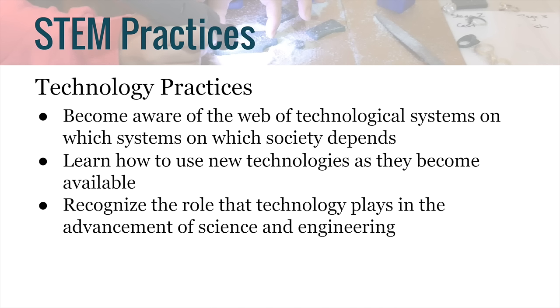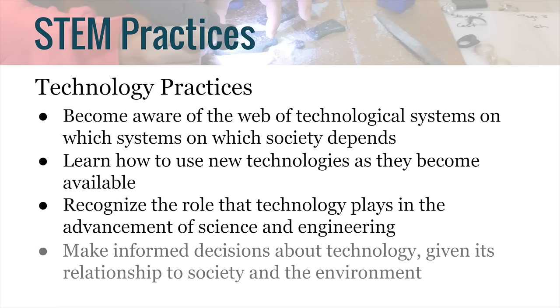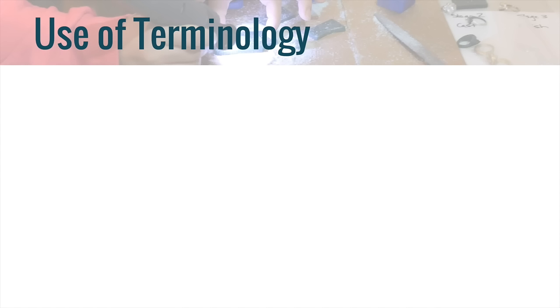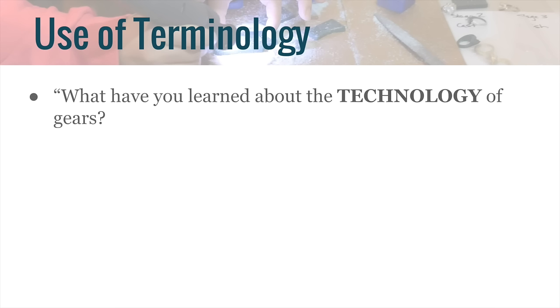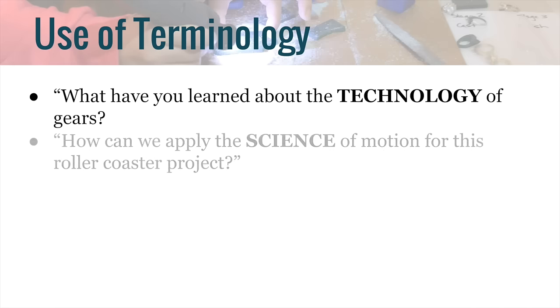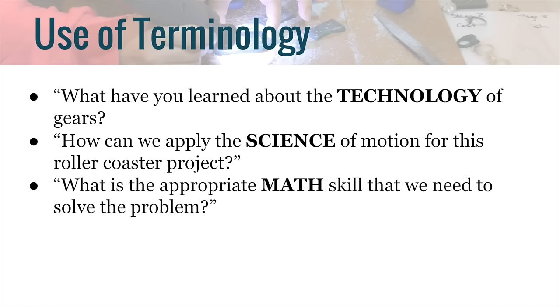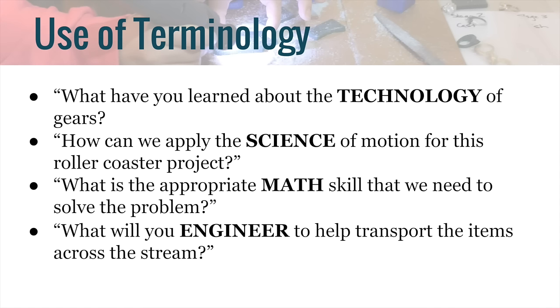Practice three: recognize the role that technology plays in the advancement of science and engineering. Practice four: make informed decisions about technology given its relationship to society and the environment. When applying these practices, it is important as educators to model the use of words — technology, science, math, and engineering. For example: 'What have you learned about the technology of gears?' 'How can we apply the science of motion for this roller coaster project?' 'What is the appropriate math skill that we need to solve this problem?' 'What will you engineer to help transport the items across the river?'